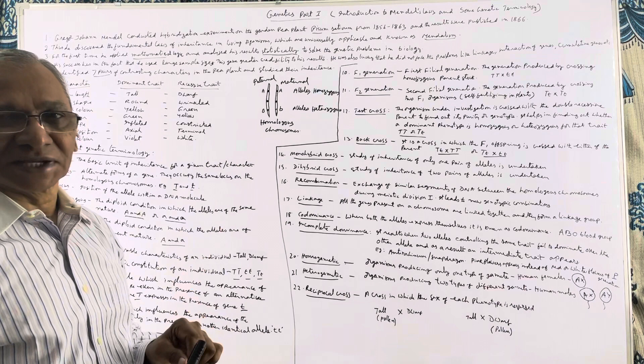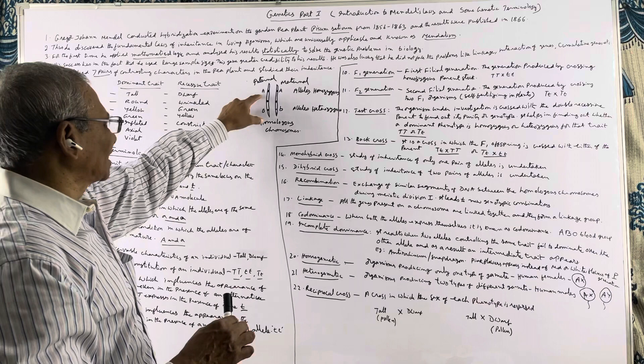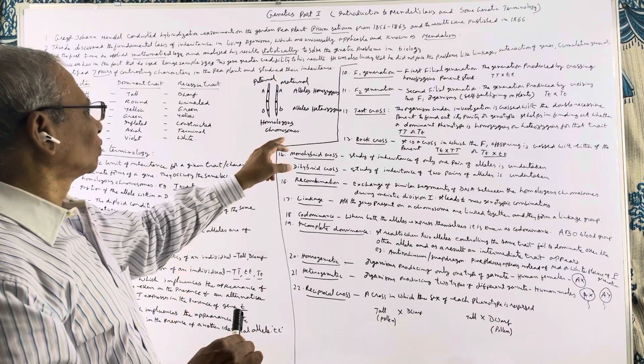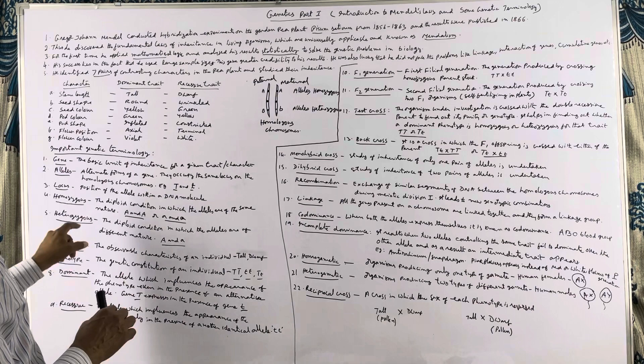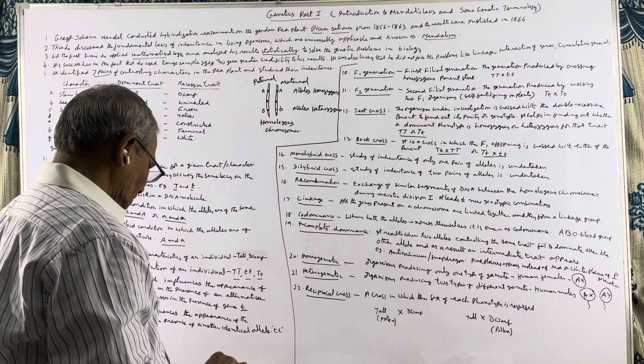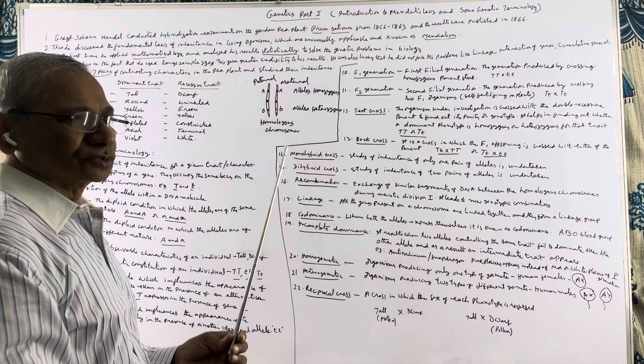We will be repeating these terms again and again as we proceed through the topics in genetics. What are alleles? Alleles occupy the same locus on homologous chromosomes. If they are identical, we call them homozygous. If they are different in their expression, we call them heterozygous. The locus is the position of a gene on the chromosome — this is the locus of gene A, this is the locus of gene B.